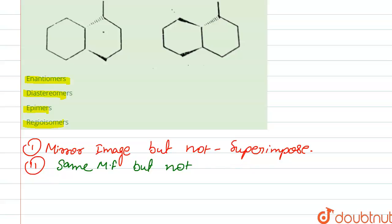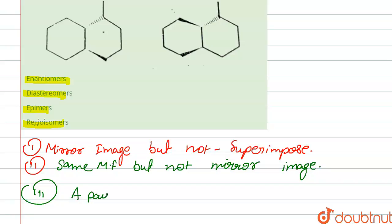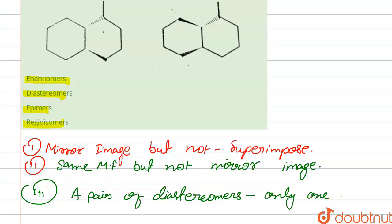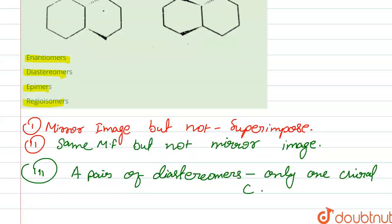Next are epimers. Epimers are a pair of diastereomers in which only one chiral carbon has a different absolute configuration, out of at least two chiral carbons.